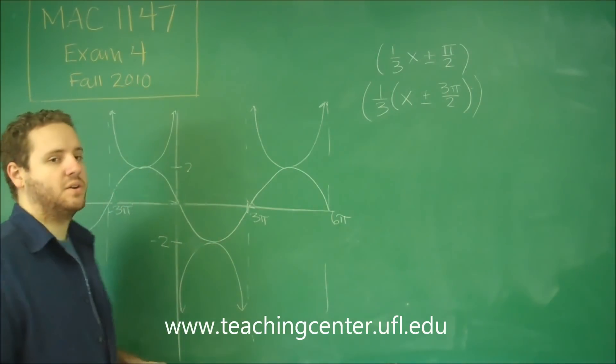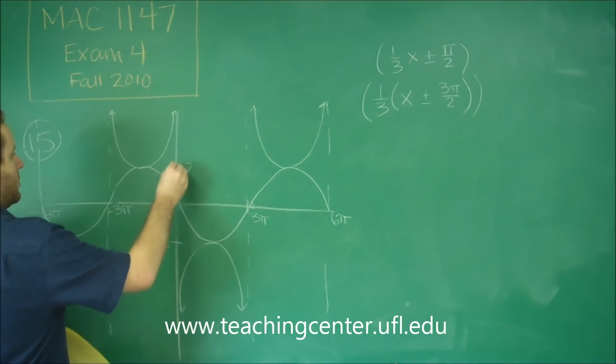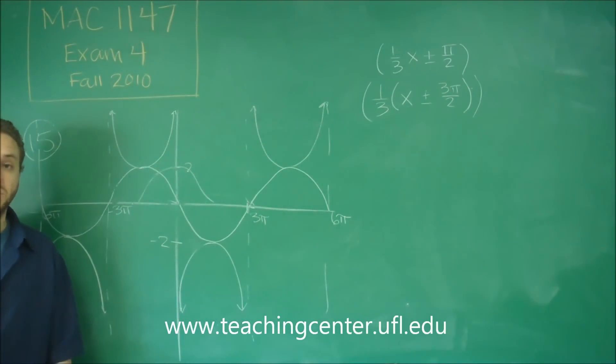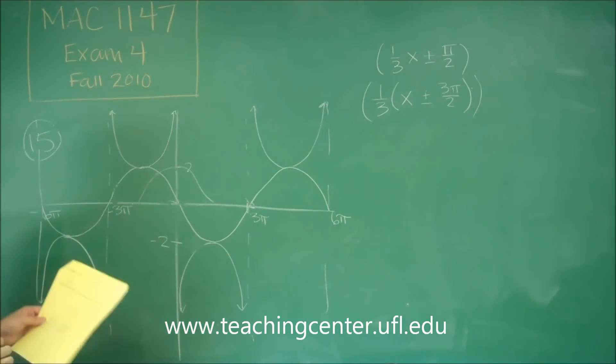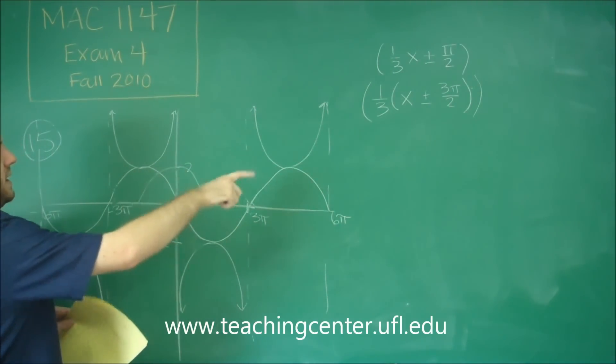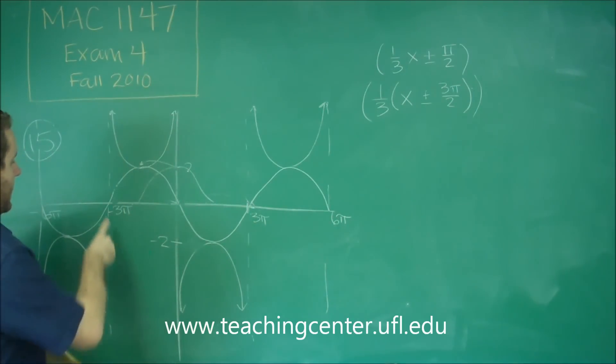Normally your secant graph, or the cosine graph that goes with your cosecant graph, normally would start there with the maximum at the origin. So you should see here that to get to the graph that we have, we need to shift this left by 3 pi over 2.